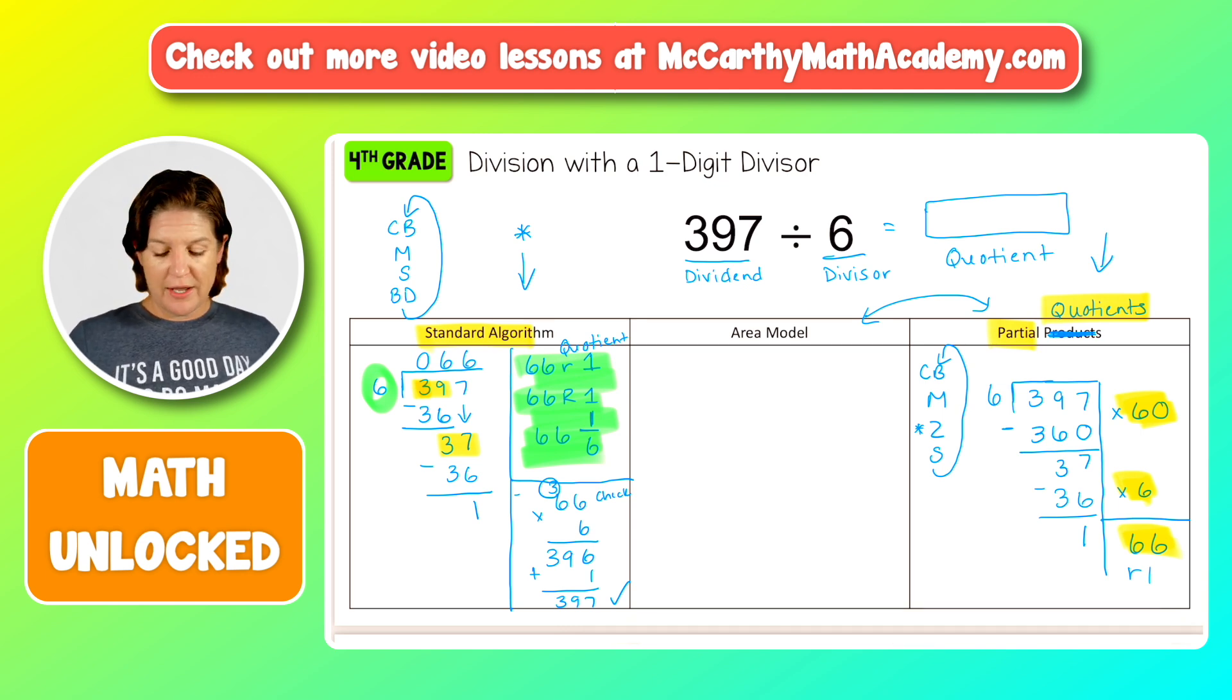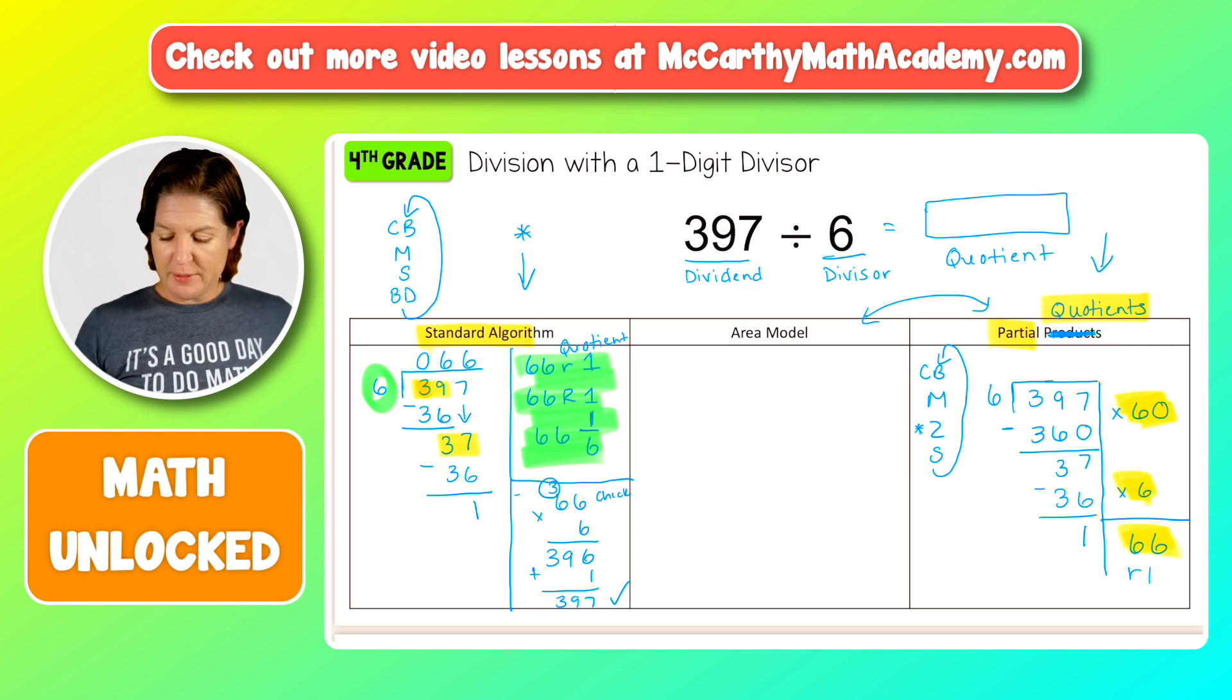That is the partial quotients method. I actually really liked that one. But again, I lean more towards the standard algorithm because especially when I get to like fifth grade, because in sixth grade, they really need to have a firm grasp on that one area model.